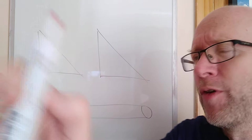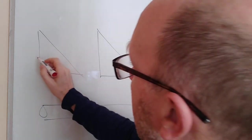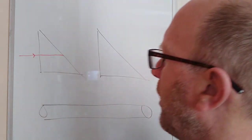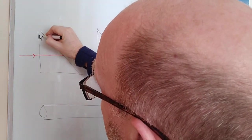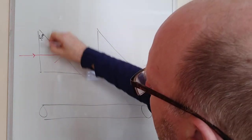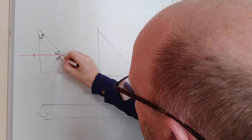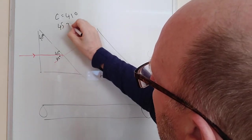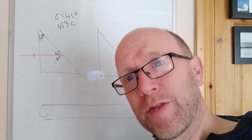Now let's look at the two prisms and optical fiber. For the triangular 45° prism: light enters one short face at right angles and travels straight in. Drawing the normal at 90°, the triangle gives angles of 45°, 90°, and 45°, so the angle of incidence on the back face is 45°. Since the critical angle for glass is 41° and 45° is greater than 41°, total internal reflection occurs.